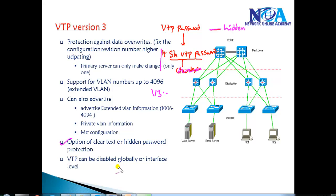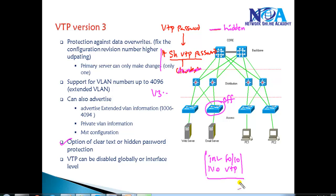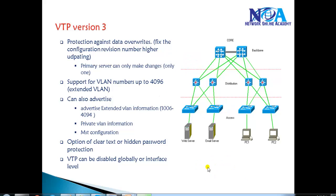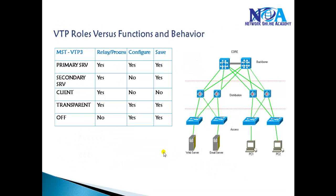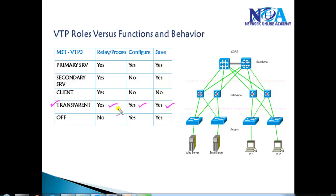One more enhancement: you can disable VTP version 3 globally on a switch using 'vtp mode off', or you can disable it on a specific interface. For example, if you have a port and don't want VTP advertisements sent or received on it, you can disable VTP on just that interface instead of disabling it globally. So there are multiple options — disable globally or disable on a specific interface.